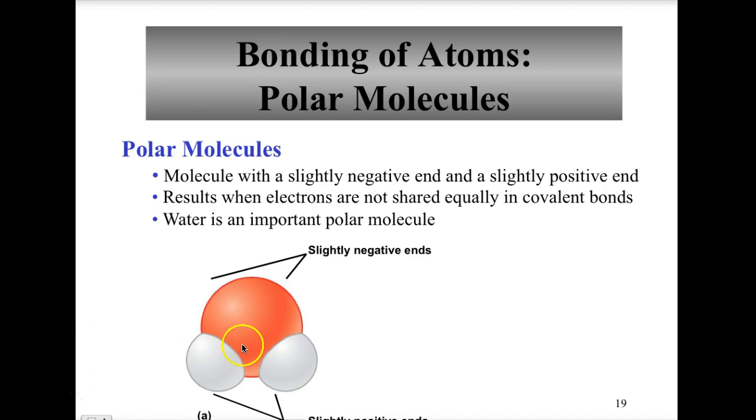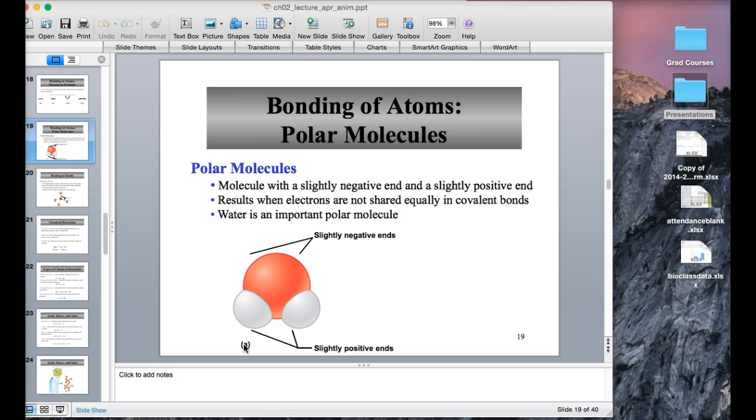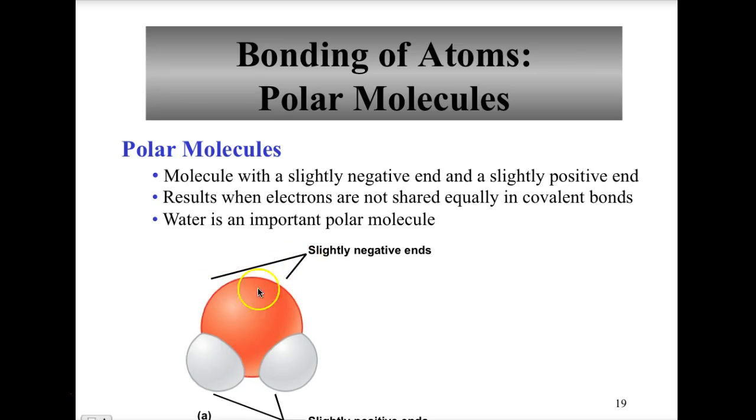Last time we were looking at polar covalent bonds. What we see is up here we have the slightly negative region, down here we have slightly positive regions. This would be representative of the typical water molecule, and we get that due to unequal sharing of electrons, those valent electrons in that polar covalent bond.